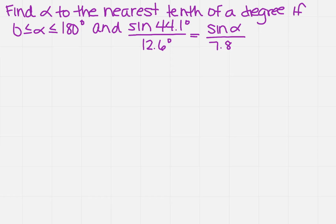Find alpha to the nearest tenth of a degree if zero is less than or equal to alpha is less than or equal to 180 degrees and the following equation is true. So how would I do this?